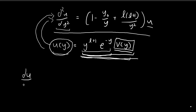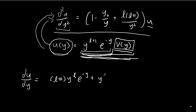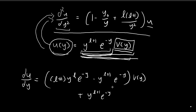First, we're going to differentiate once to get du/dy, using the product rule. We differentiate the first term and retain the second, then retain the first term and differentiate the second. Differentiating the first term — y to the power of l plus 1 — using the product rule again, gives l plus 1 times y to the power of l, times e to the power of negative y. Then retaining that and differentiating e to the power of negative y gives negative e to the power of negative y, so we place the negative sign at the front: negative e to the power of negative y multiplied by v of y. Retaining those terms and differentiating v of y gives dv/dy.